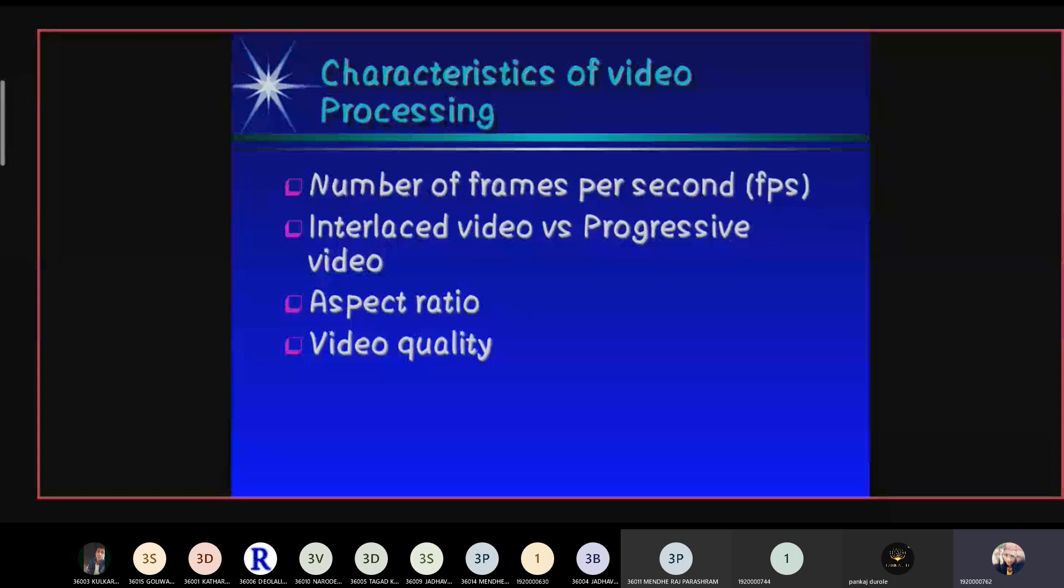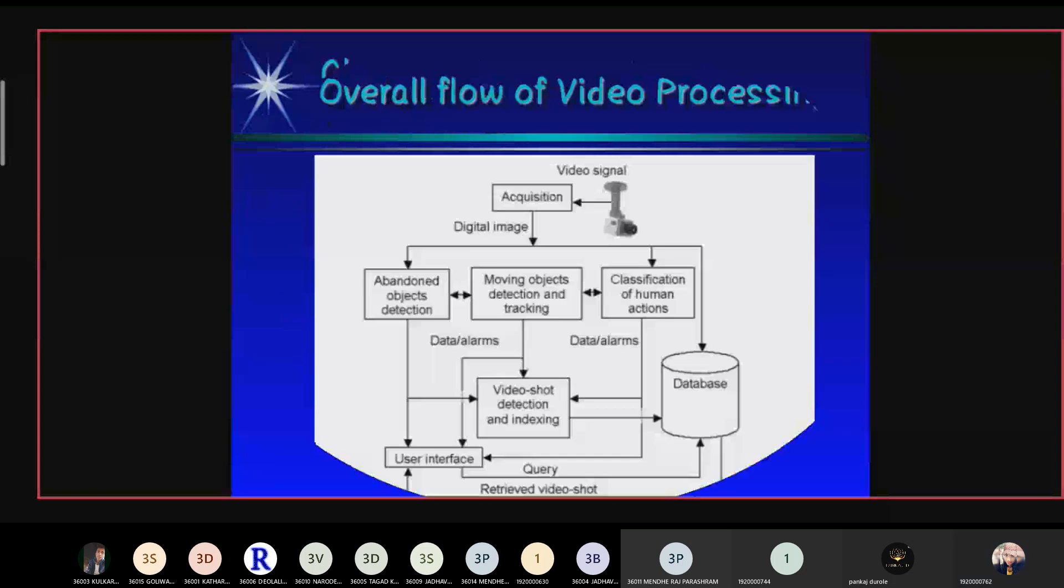Next slide is overall flow of video processing. In this flow, video is given as input and it's converted into frames, then processed through detection, tracking, classification, and indexing to retrieve the output. Next is current research in video processing. Many research is based on video processing covering topics such as video segmentation, video classification, video indexing, video tracking, video compression, video encryption, and video steganography.